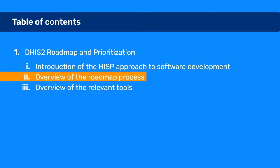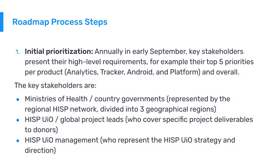We conduct an initial prioritization of requirements annually in early September with key stakeholders who present their high-level requirements — for example, their top five priorities per product. The key stakeholders we seek input from are the ministries of health and country governments represented by the regional HISP network, divided into three geographical regions.